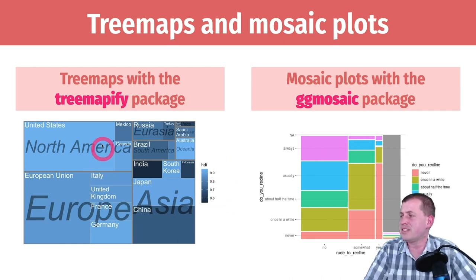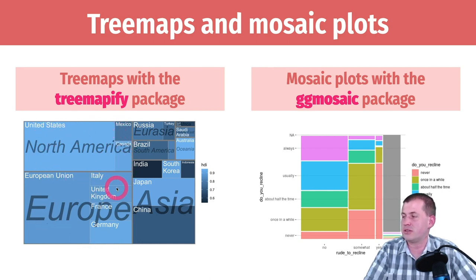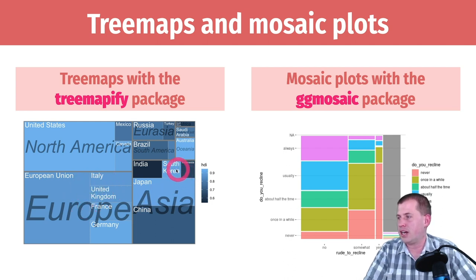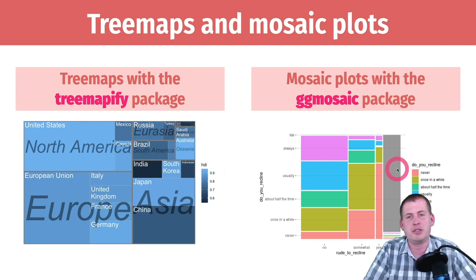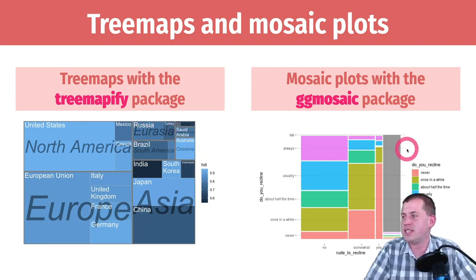Here you can see that North America is a big chunk of the world, Europe is a big chunk of the world — they have kind of the highest HDI. Asia has a much smaller HDI. You can see the main countries sized by how big their Human Development Index is.